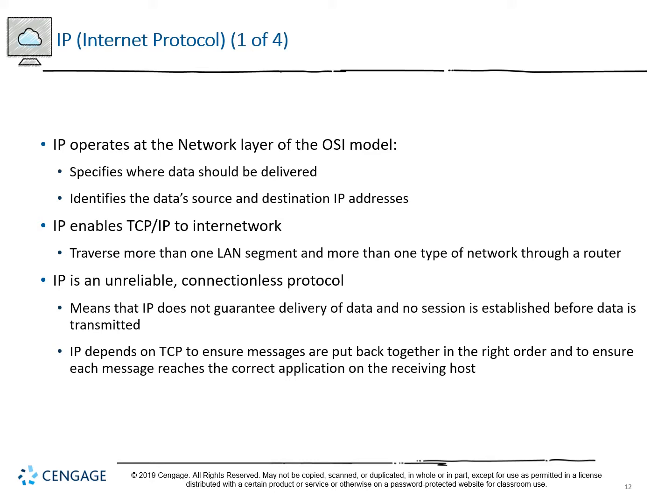IP operates at Layer 3, the network layer. It handles specification of where data should be delivered and identifies source and destination IP addresses. IP is the section of the TCP/IP protocol suite that allows inter-networking — you can traverse more than one LAN segment and more than one type of network through a router, using a universal addressing system. IP is also unreliable and connectionless like UDP, so TCP is what we rely on to ensure delivery, session establishment, and reassembly in the correct sequence.